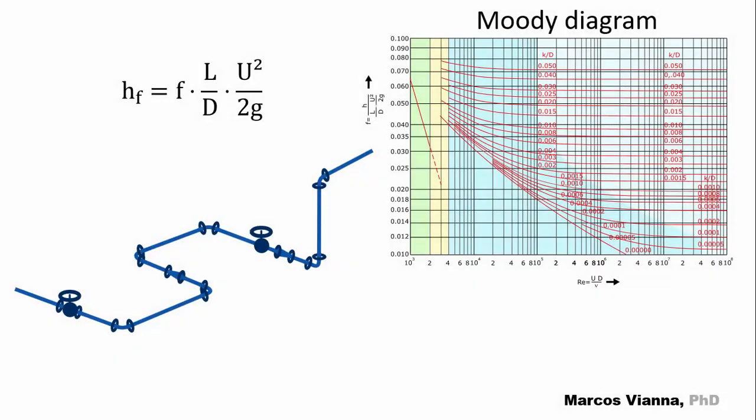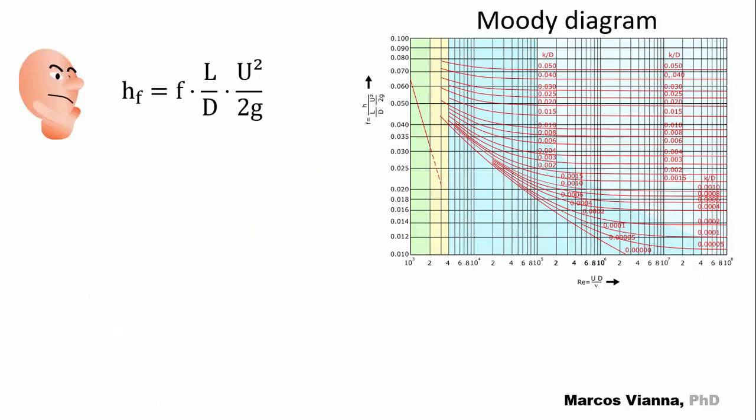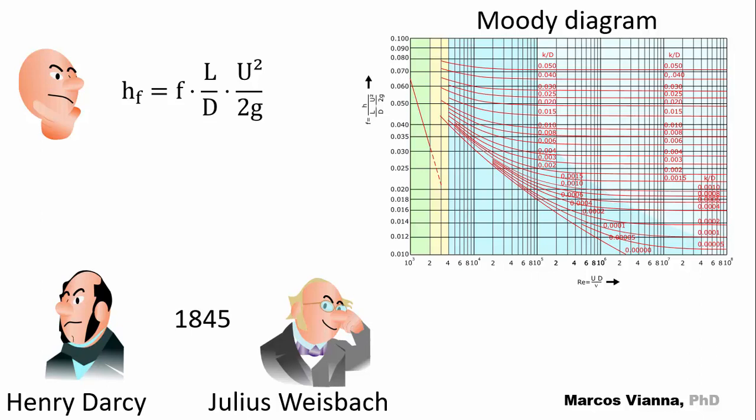In a previous video, we saw how to calculate head losses in pipes using the universal formula. We know it's based on the Darcy-Weisbach formula. Here are its authors, Mr. Henry Darcy and Mr. Julius Weisbach. Their formula dates back from 1845.